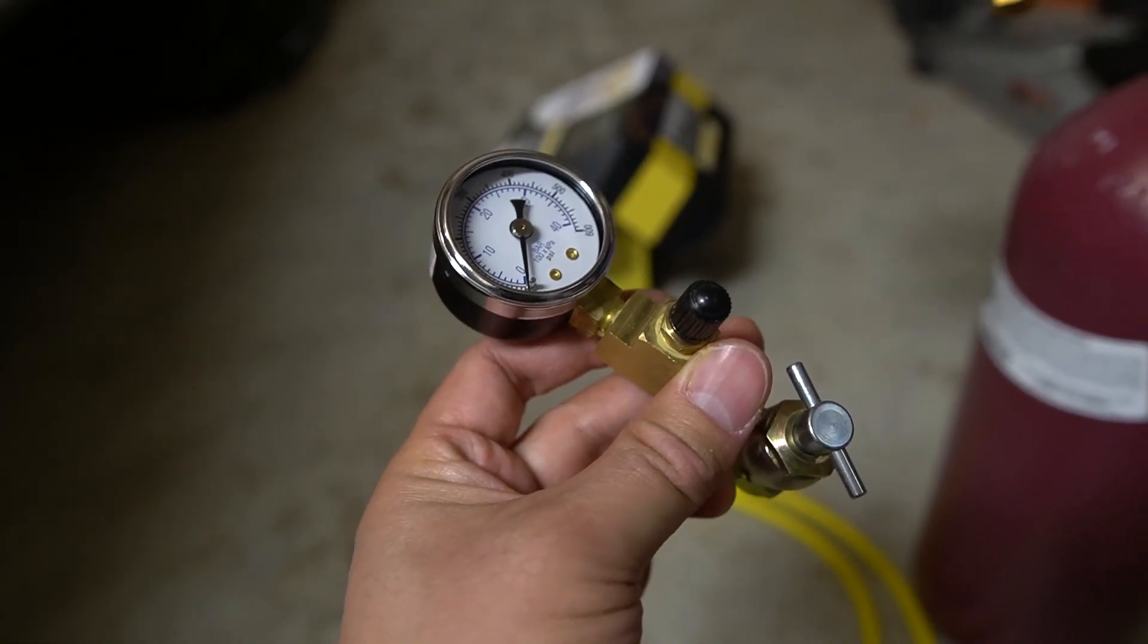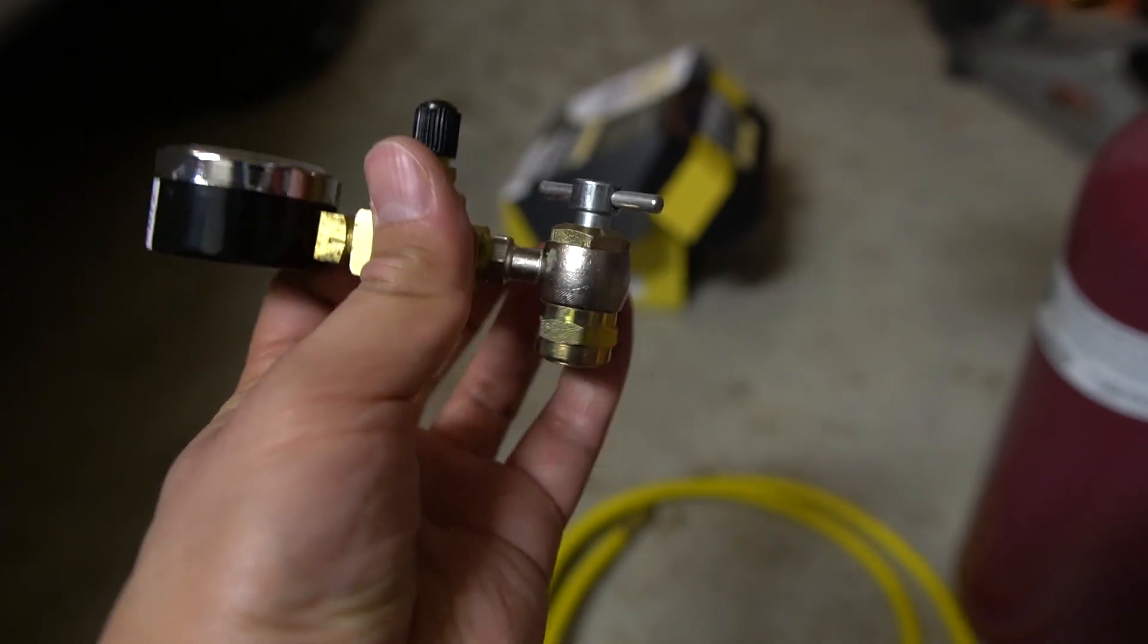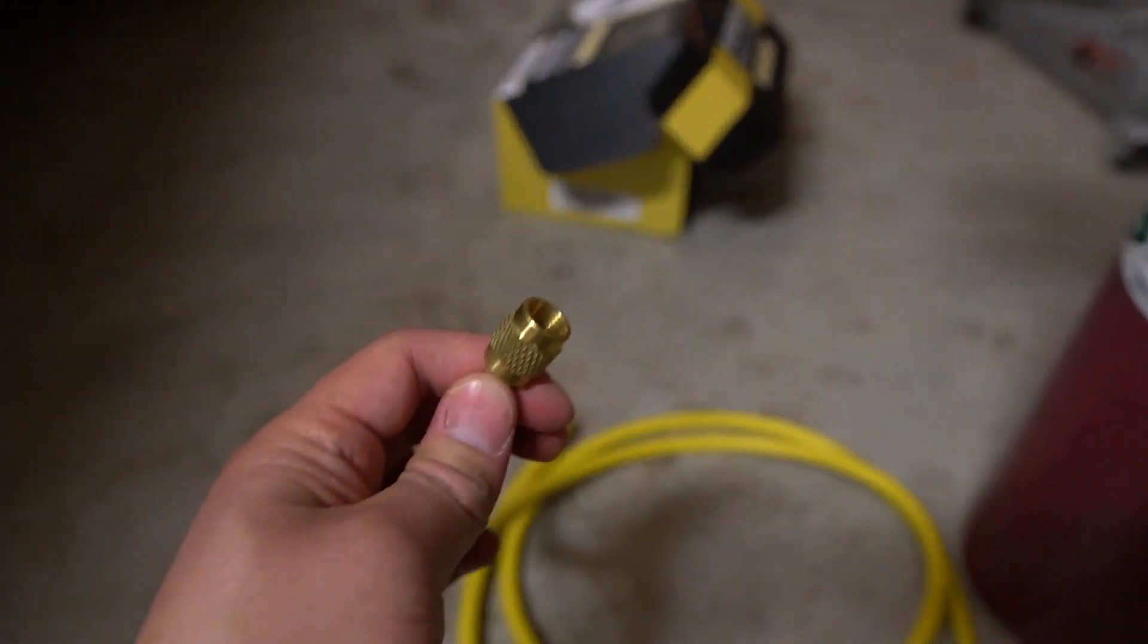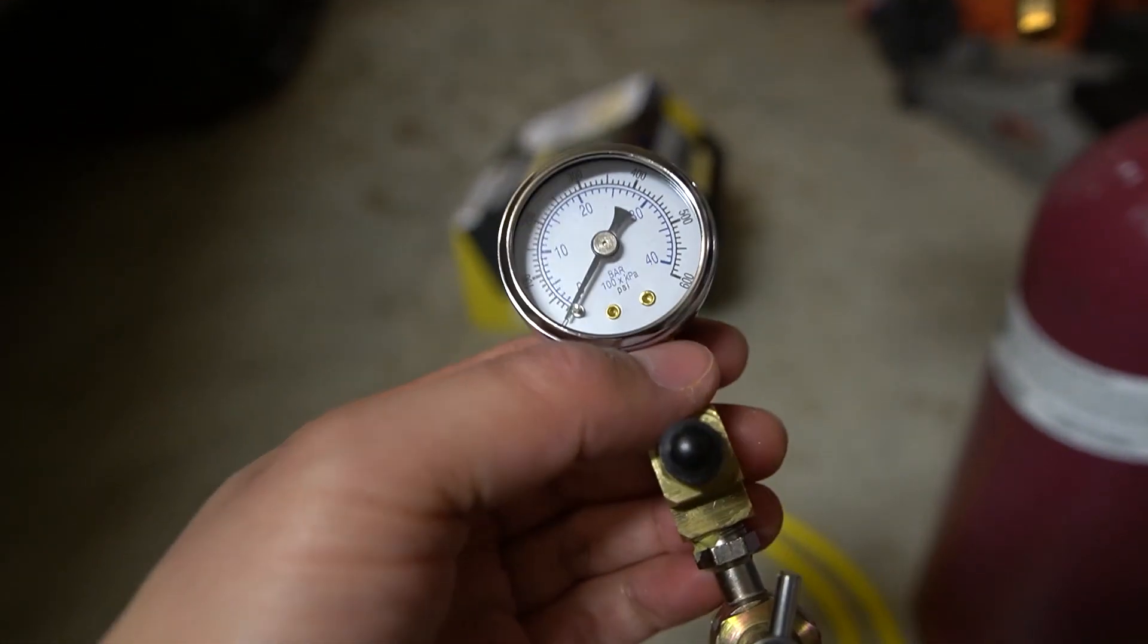You'll save some money not having to purchase this. What you would do is just get a no air loss chuck, which is this piece right here, and attach it directly to the end of this hose. I just chose to go with this method because I prefer to have a gauge to be able to check the pressure on my shocks.